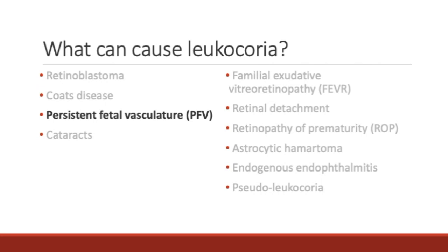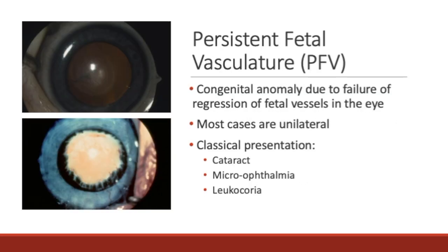Next, persistent fetal vasculature. This is a congenital defect that results when the fetal vasculature fails to regress in the eye. The classical presentation includes a cataract, an abnormally small eye known as microphthalmia, and leukocoria in the smaller eye that presents at about 1 to 2 weeks from birth.